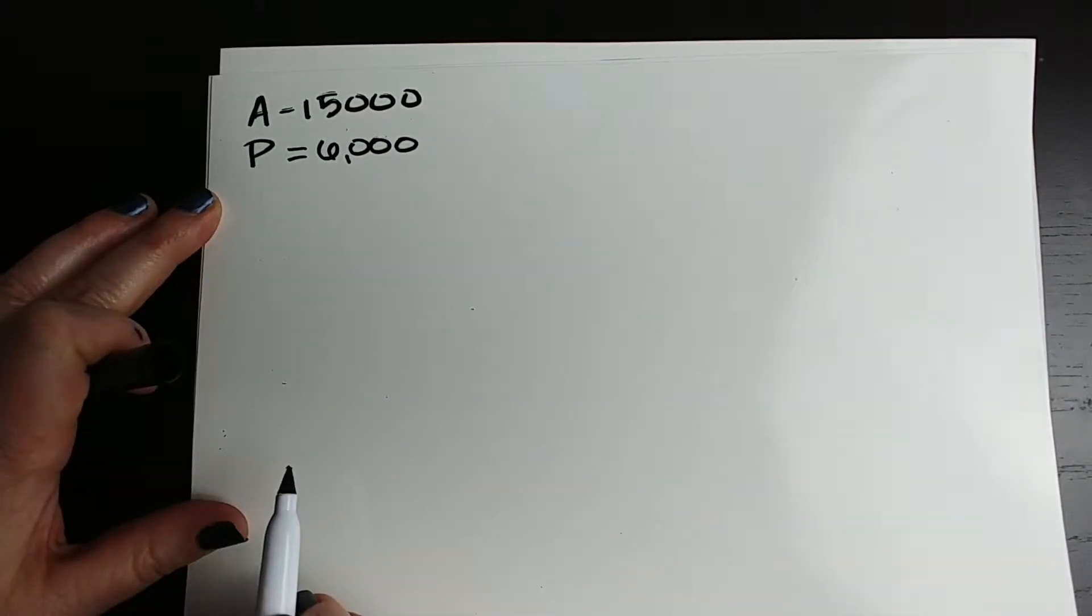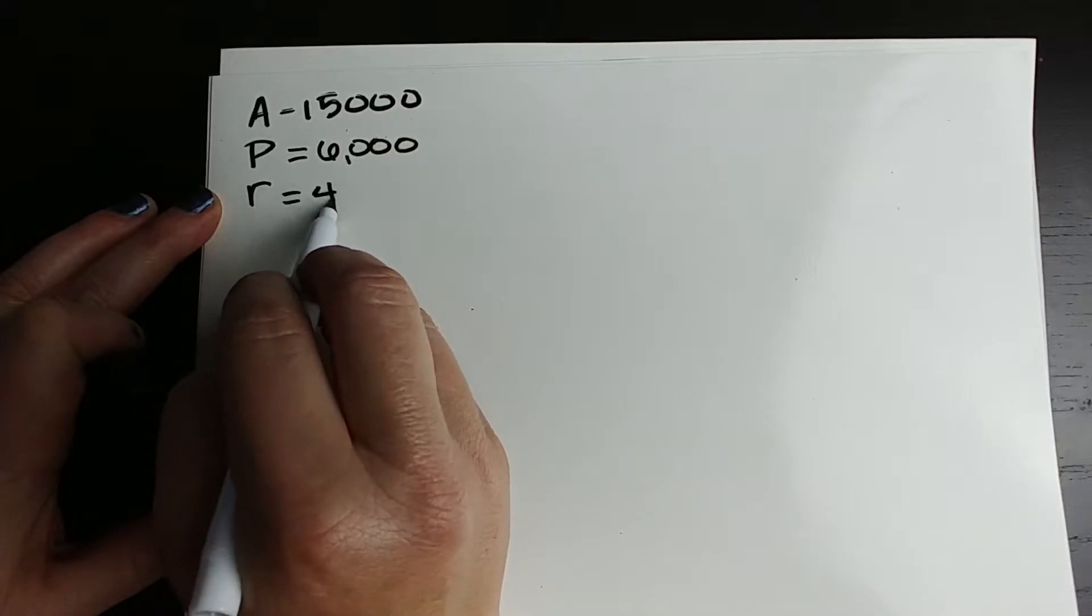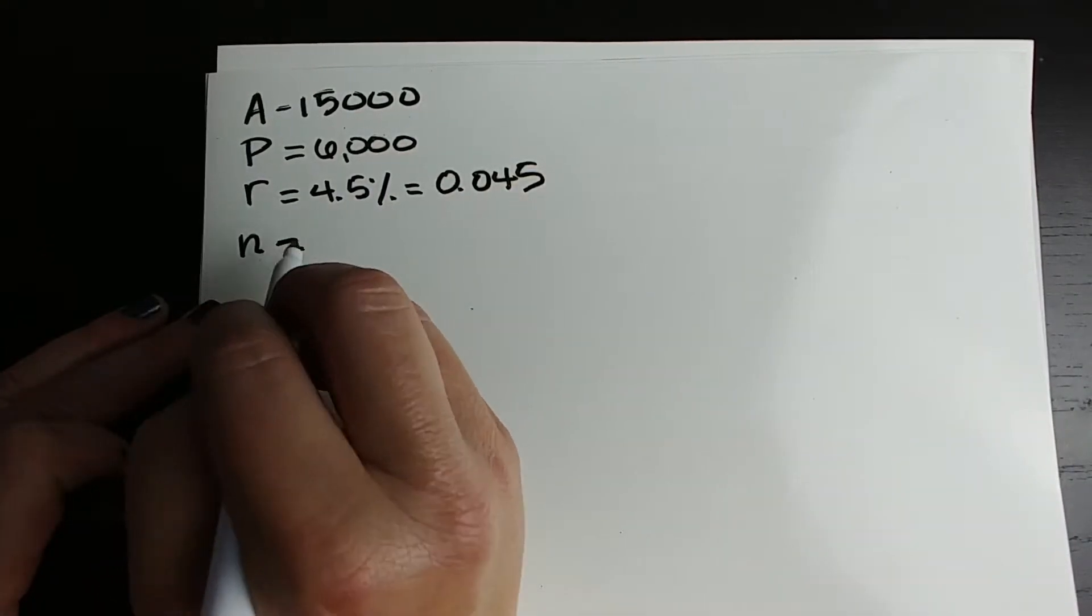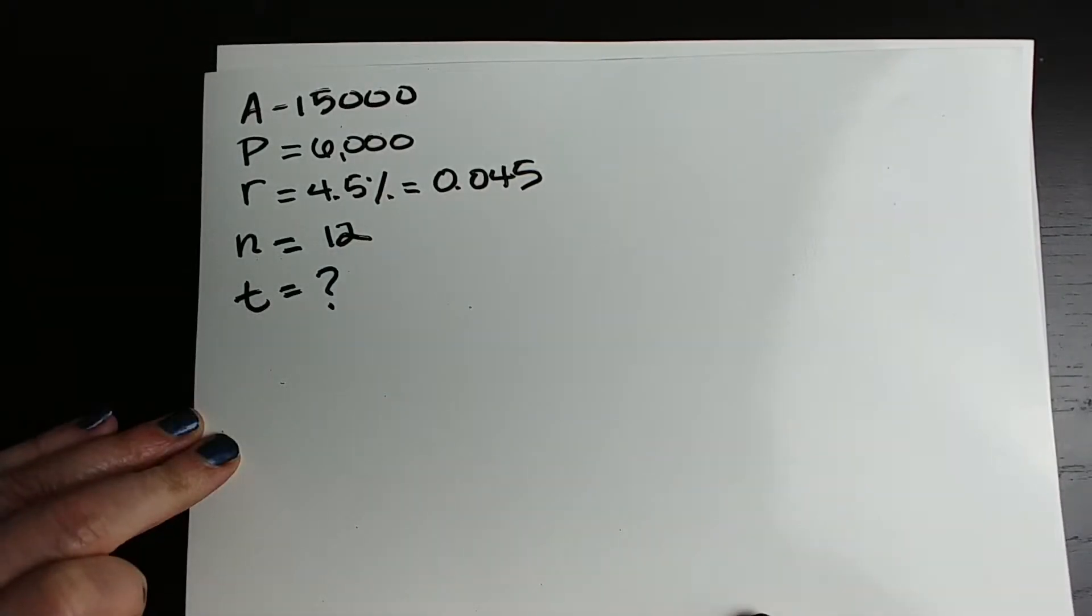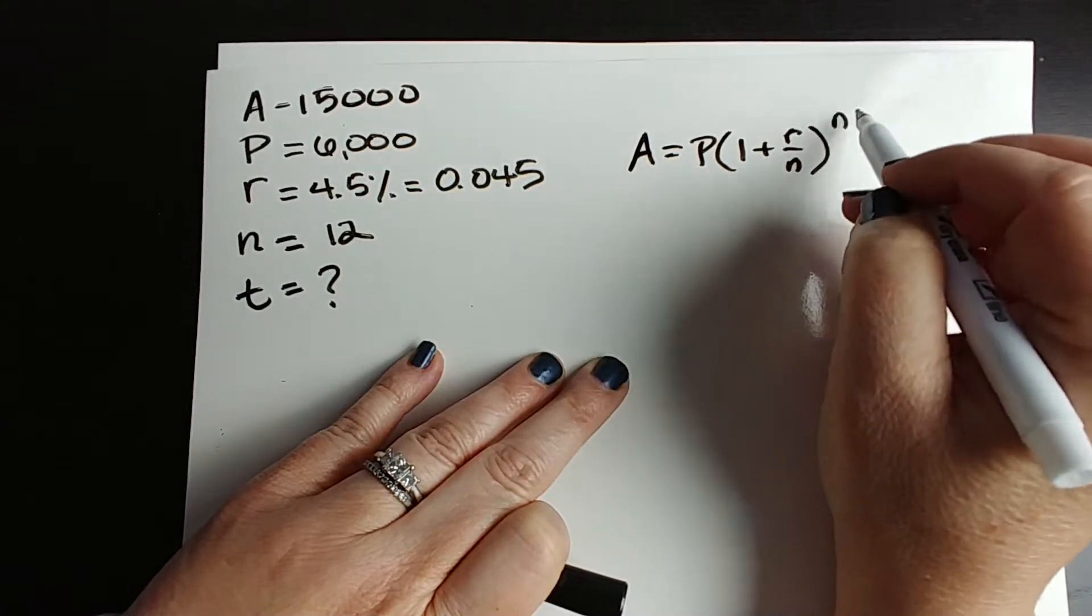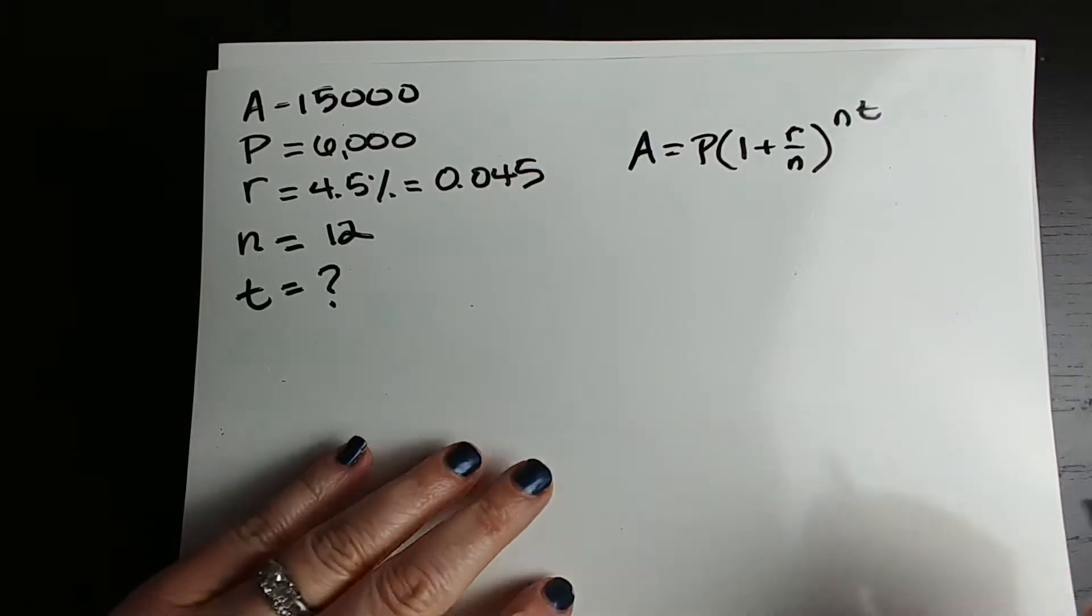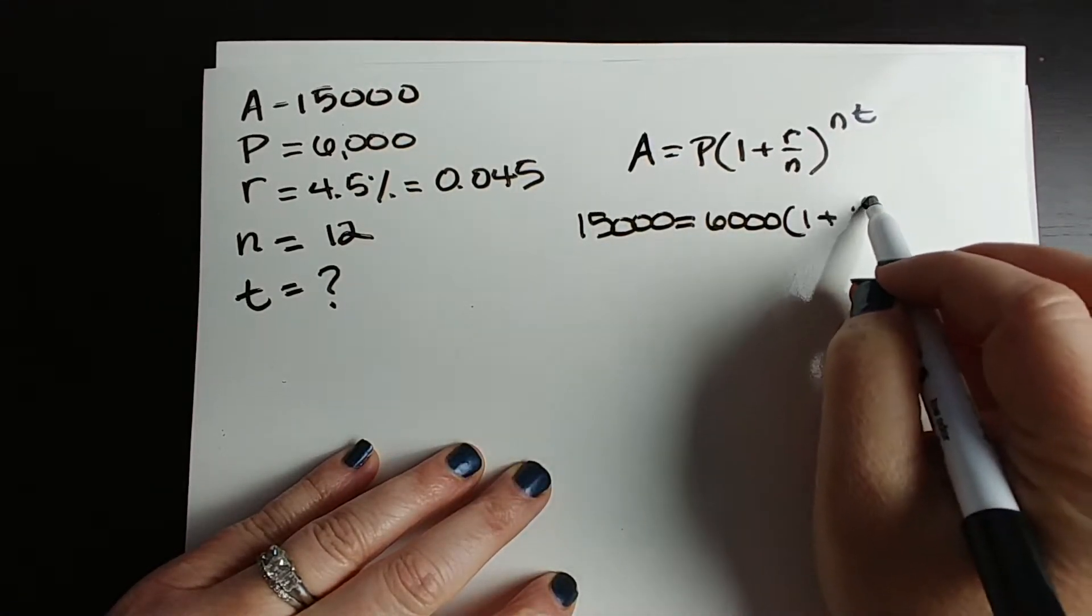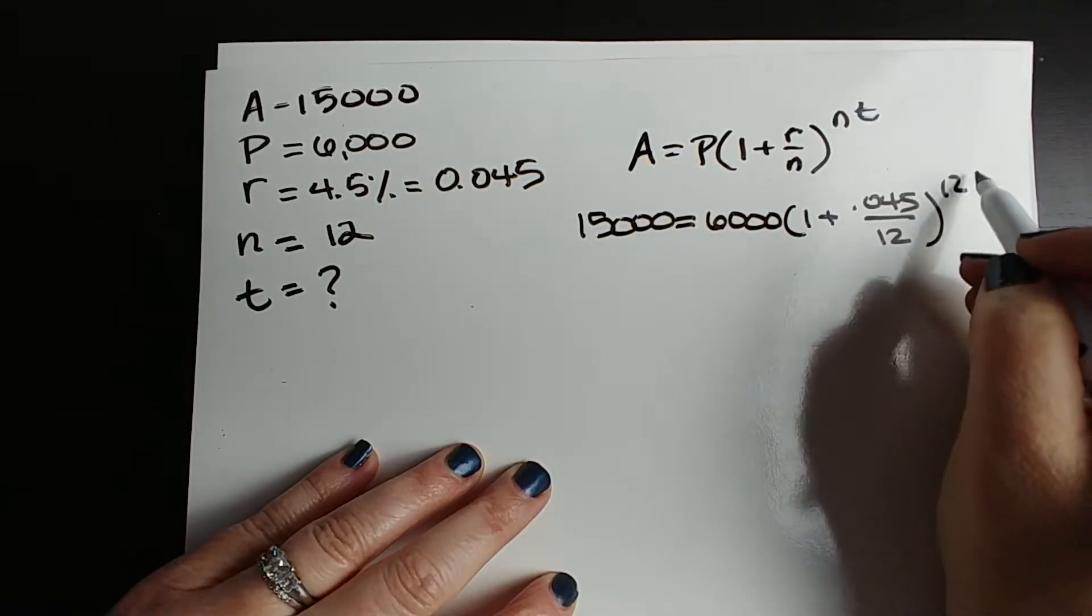So let's do this. I'm going to write everything we've already talked about here. We said that A is equal to 15,000. We said P, our initial amount, is equal to 6,000. Then we said that our rate was 4.5%, which equals 0.045. Then we said N is 12 because it's monthly. And T is our question mark. Whenever T is our question mark, we are going to be using a logarithm. So here's our formula in case we forgot from the previous page. A equals P times 1 plus R over N, all raised to the N T power. So let's plug this in. Let's see what we get. So A is our 15,000. So 15,000 equals 6,000 times 1 plus 0.045 over 12, all raised to the 12 T power.